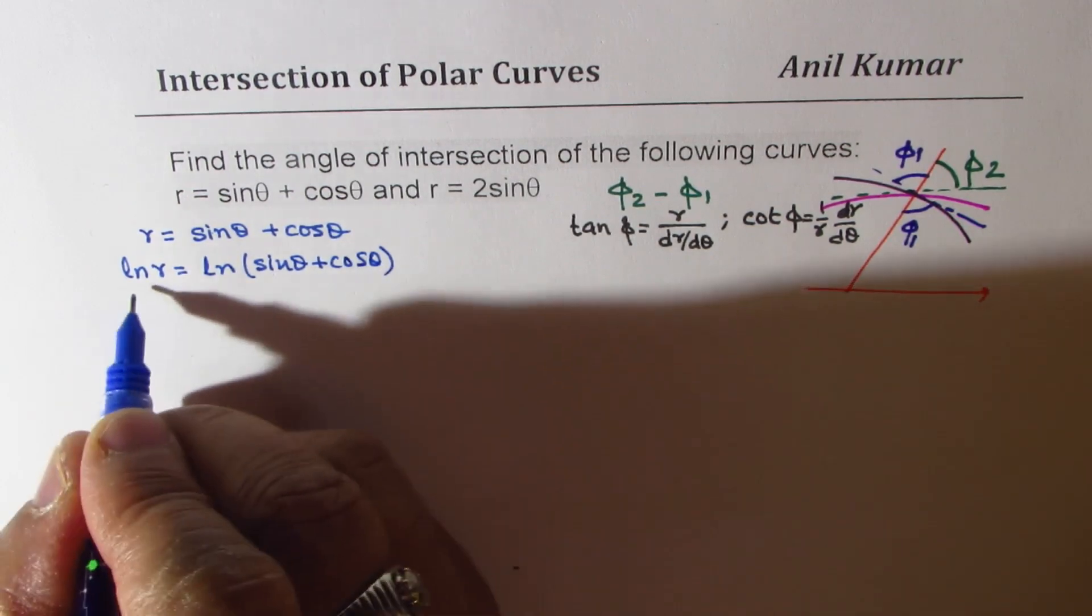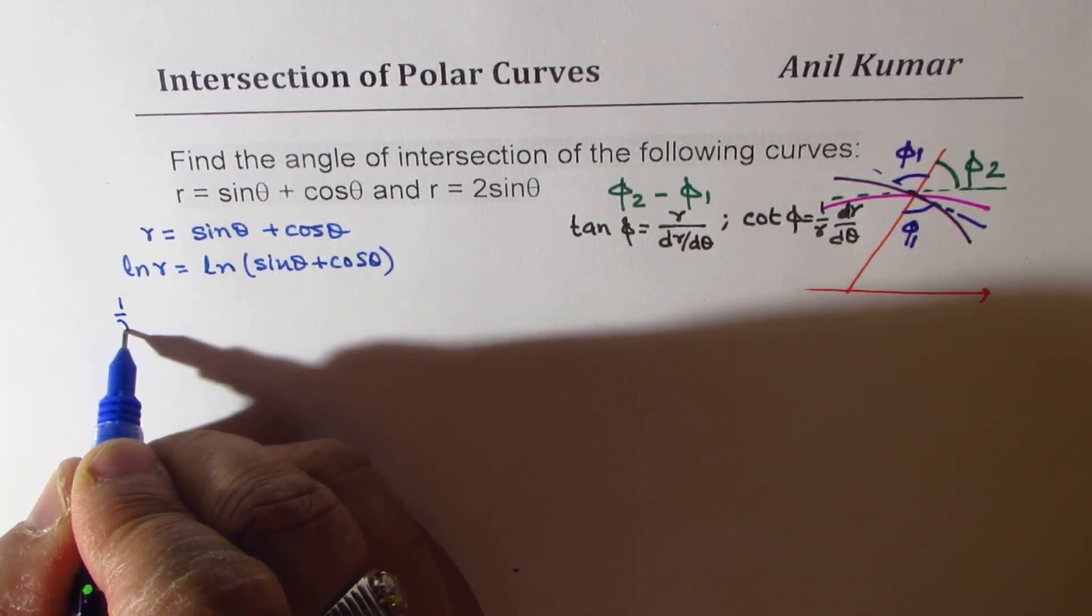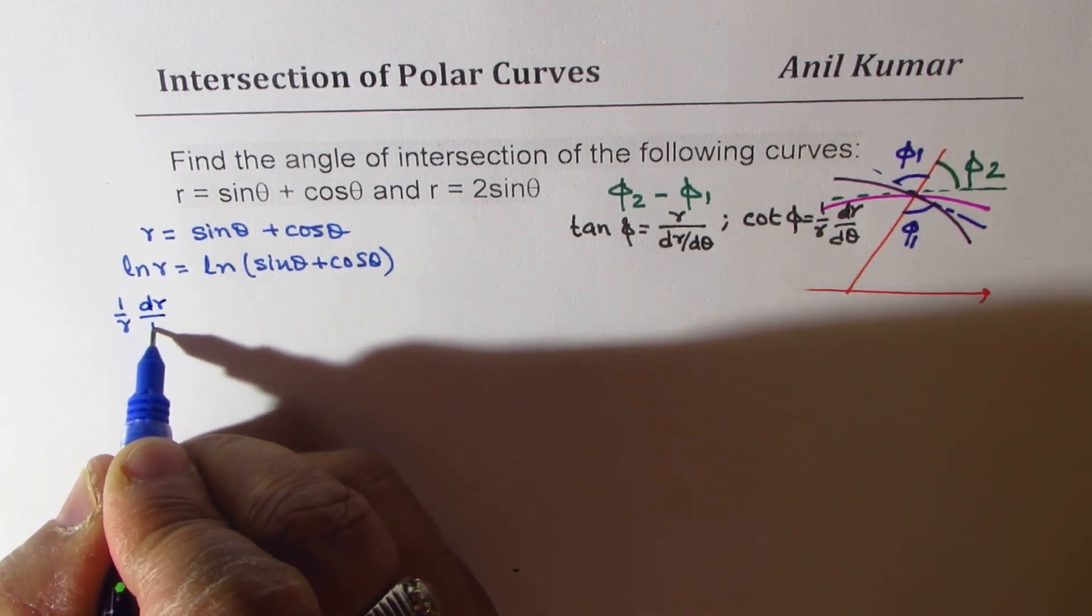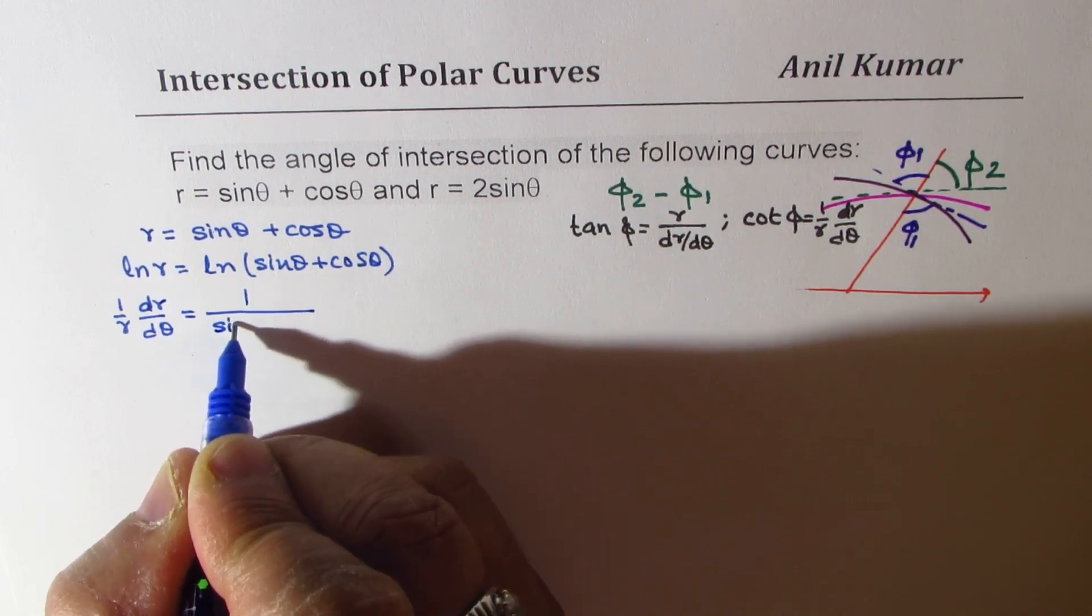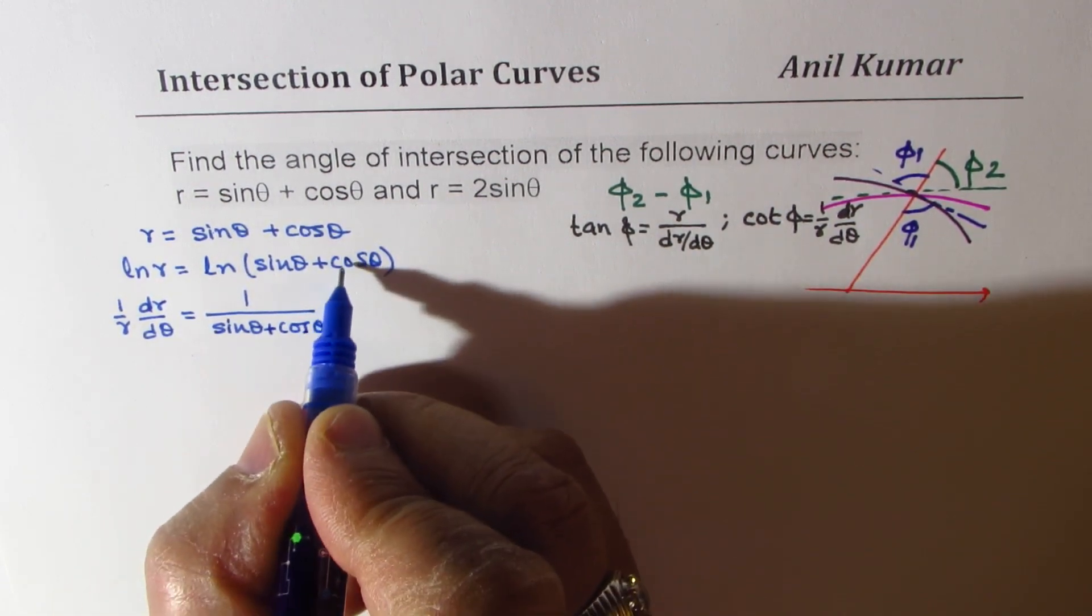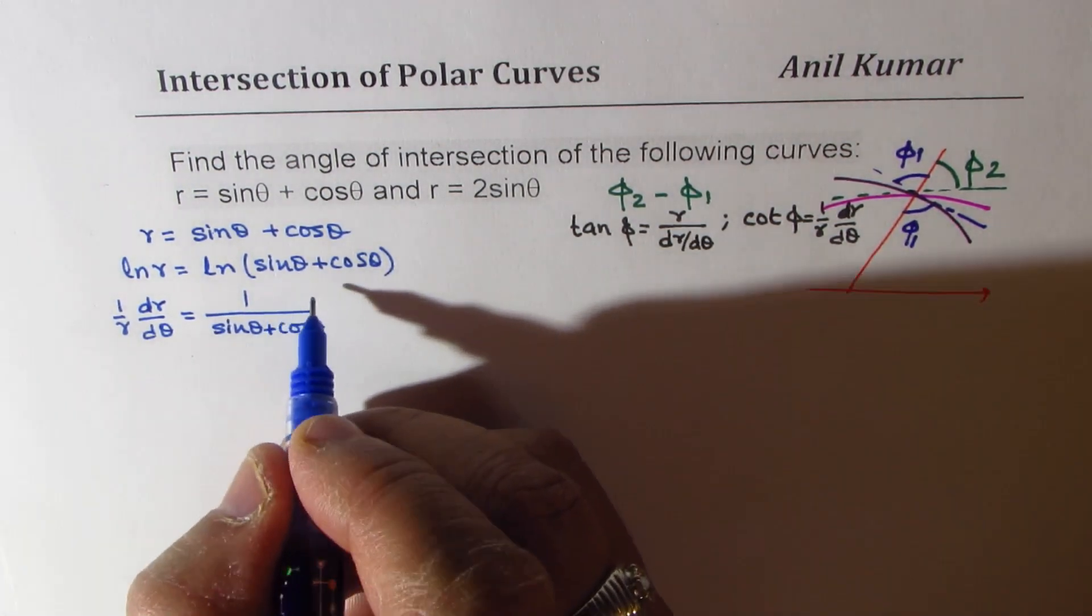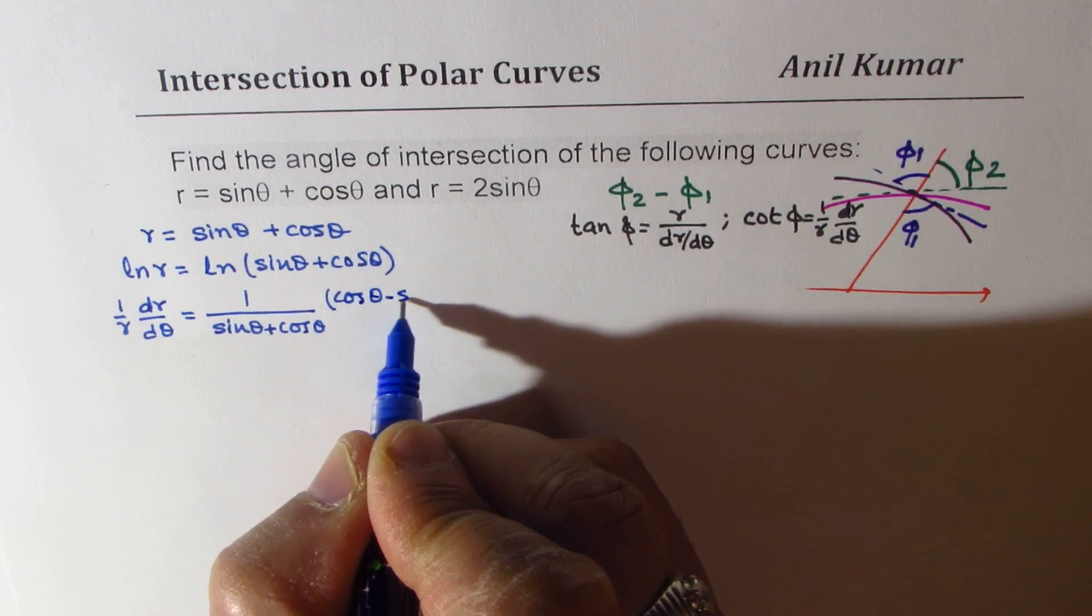Now, differentiating with respect to theta, we get 1 over r dr d theta equals 1 over sine theta plus cosine theta times the derivative of this, which is cosine theta minus sine theta.